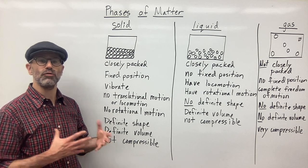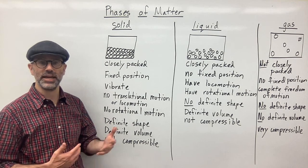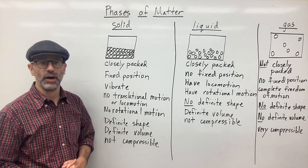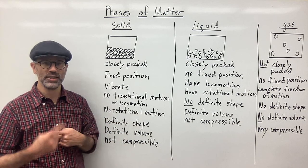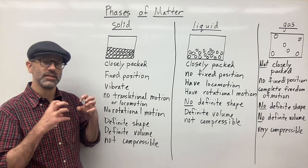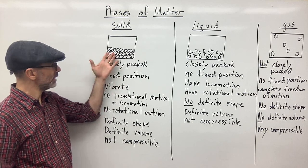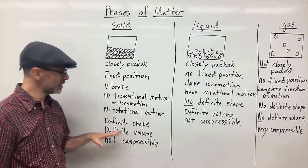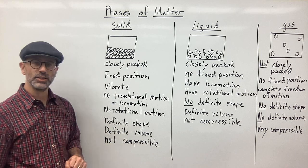They can't really move out of the position. They don't have locomotion, meaning motion from place to place or translational motion. They don't have rotational motion, so they can't really rotate in place. They're really stuck in place because they're so closely packed. This leads to these characteristics. So that's why solids have a definite shape, a definite volume, and they're not compressible.